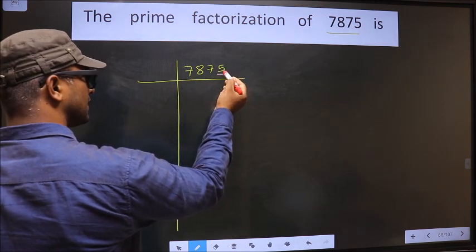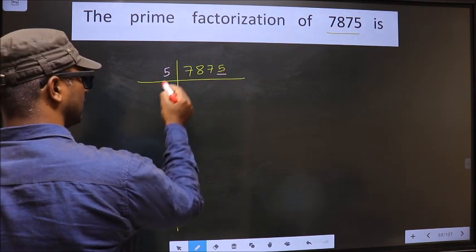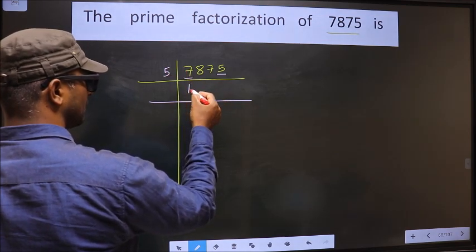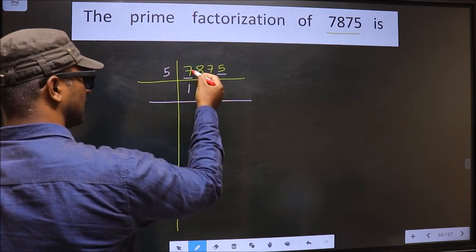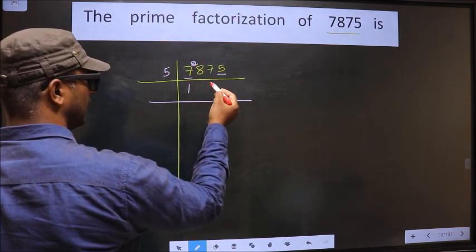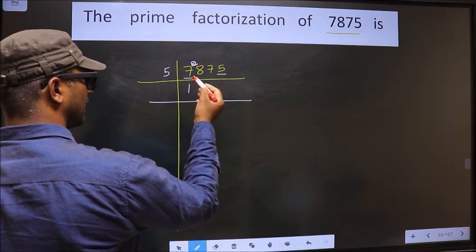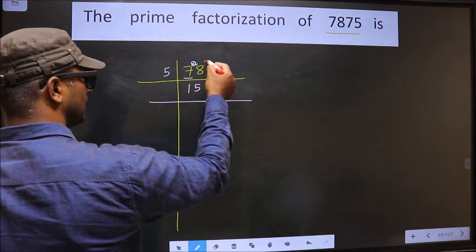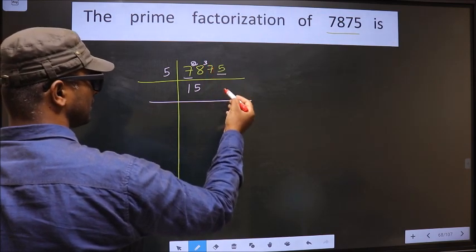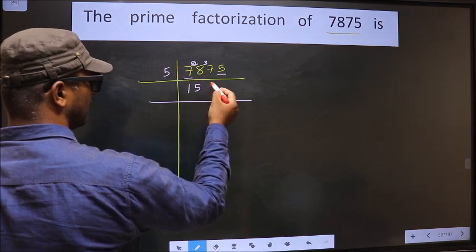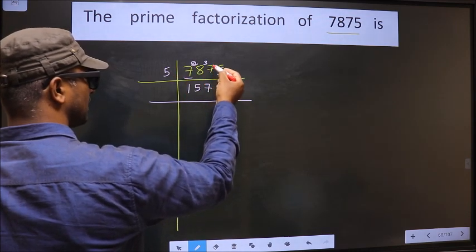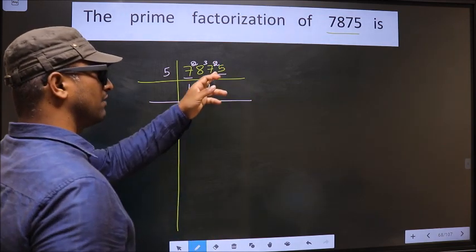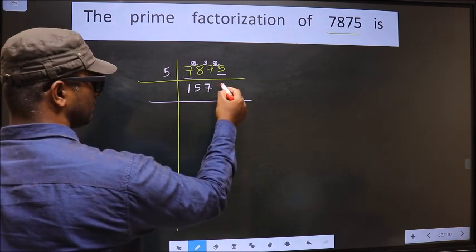For this number, the last digit is 5, so we take 5 here. The first number is 7. A number close to 7 in the 5 table is 5 once, 5. 7 minus 5 is 2, carried forward, making it 28. A number close to 28 in the 5 table is 5 fives, 25. 28 minus 25 is 3, carried forward, making it 37. A number close to 37 in the 5 table is 5 sevens, 35. 37 minus 35 is 2, carried forward, making it 25. When do we get 25 in the 5 table? 5 fives is 25.